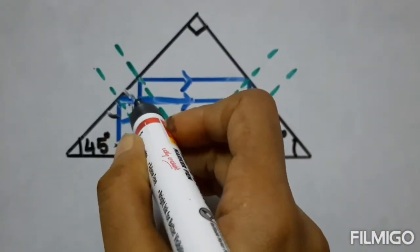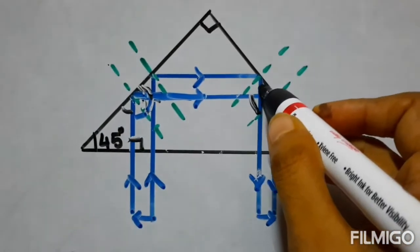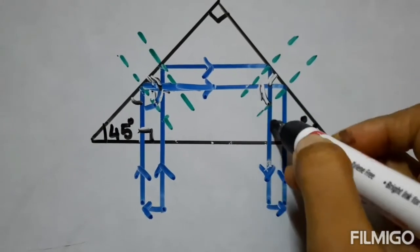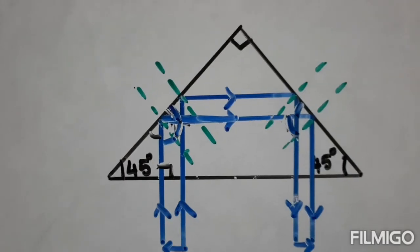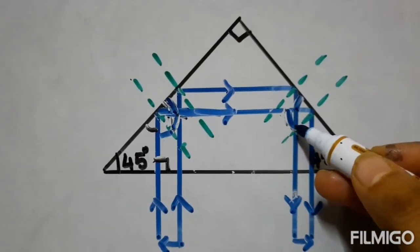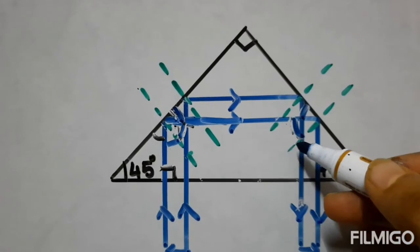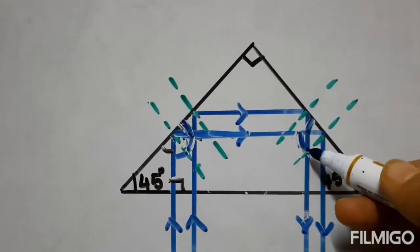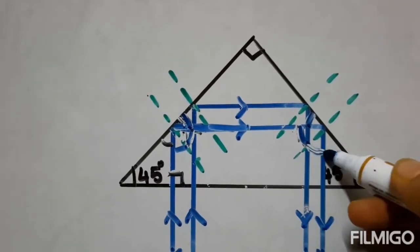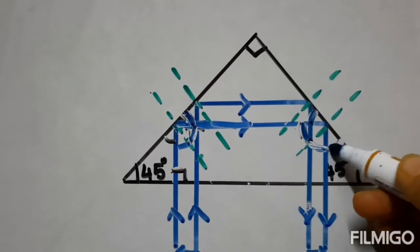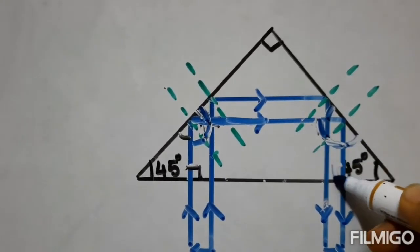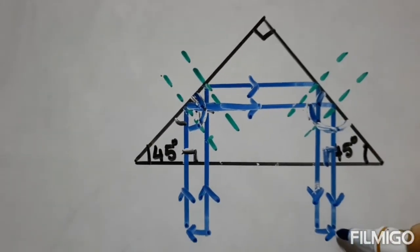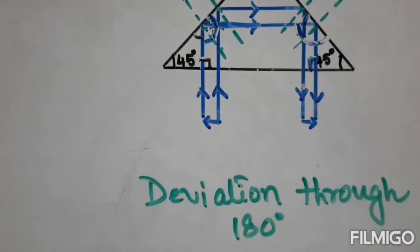This angle is 45°, so this angle will also be 45°. If this is 45° and this is 45°, then the ray is actually perpendicular and passes undeviated. Since 45° is more than the critical angle of 42°, total internal reflection takes place again. This angle is also 45°, making the ray perpendicular so it passes undeviated. This deviation is through 180°.